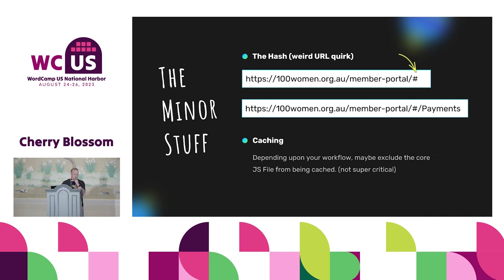The second problem was caching — specifically not the content delivered via the SPA, but the delivery of that JavaScript file itself. By default, WP Rocket, other caching plugins, and even Cloudflare will cache that JavaScript file. When we're doing fast iterative changes and deploying regularly, it's a pain having to clear Cloudflare cache and internal site cache as well. We actually have it not cached just for ease of use.